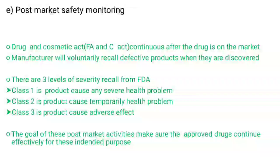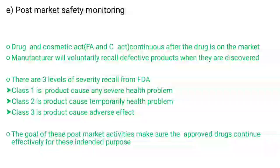Next is post-market safety monitoring. The Food, Drug, and Cosmetic Act continues after the drug is on the market. The manufacturer will voluntarily recall defective products when they are discovered. There are three levels of recall from the FDA. Class 1: the product causes any severe health problem. Class 2: the product causes temporary health problems. Class 3: the product causes adverse effects.